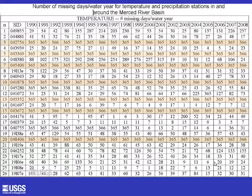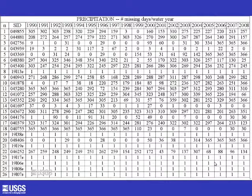The next thing you need to do is examine the station data. Here is a table showing the number of missing days per water year for temperature at the 26 stations in and around the Merced River Basin. I highlighted the stations that are missing the entire period of record. The other stations have a lot of missing data as well, so you really need to be aware of how good your data is before you start working with it.